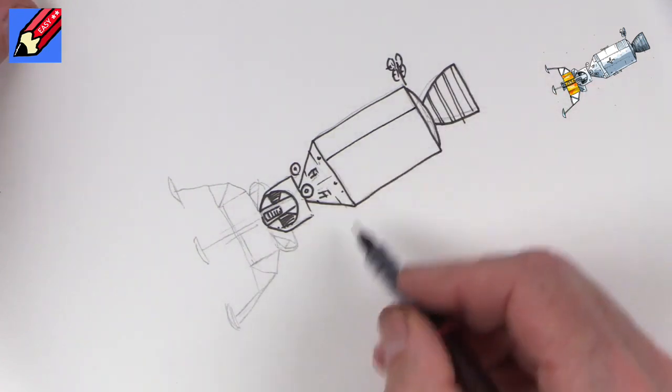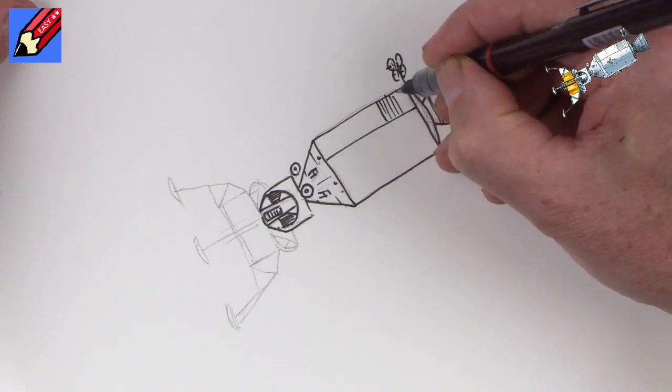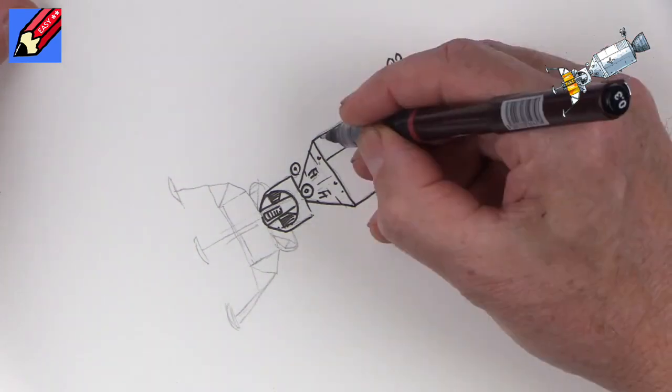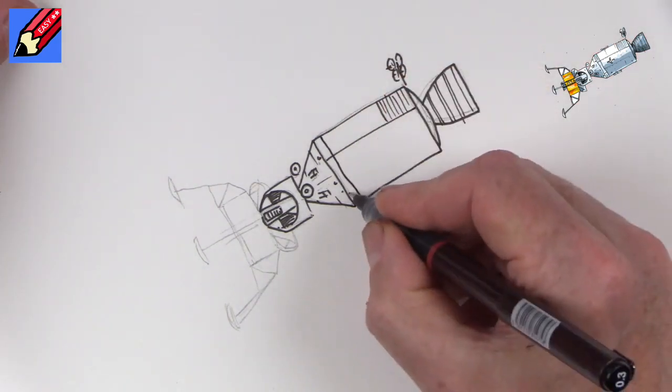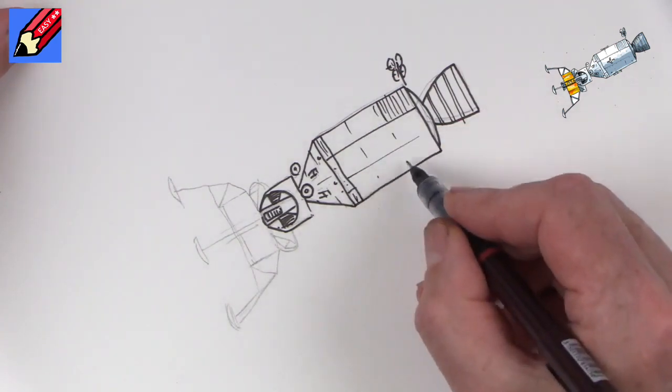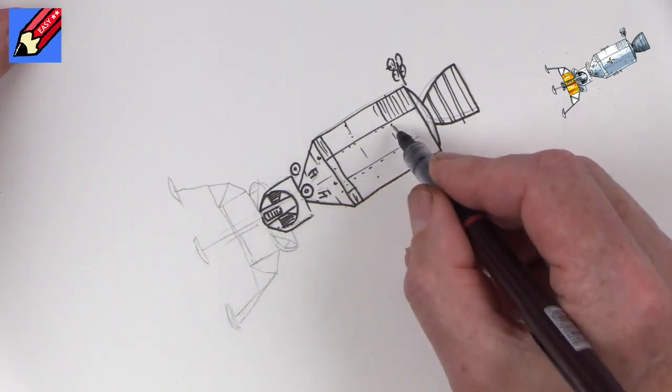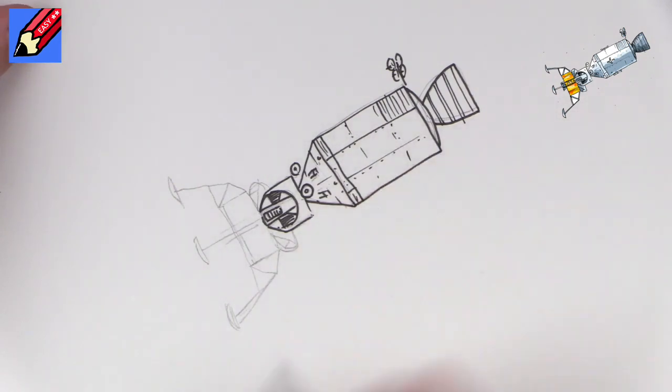I'm going to draw a line across there and a line there, and then I'm just going to draw these bits in there. And then there's a little section on there too, and then we're just going to want to have little panels. So these are kind of rivets holding all those panels together like that.